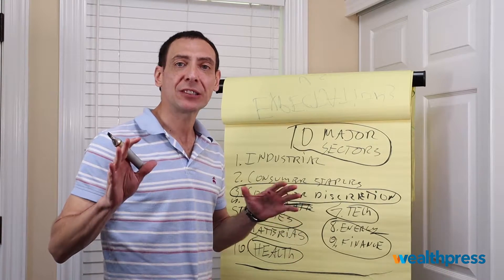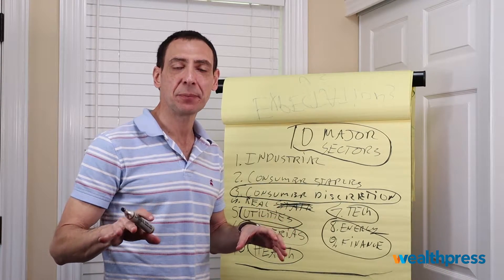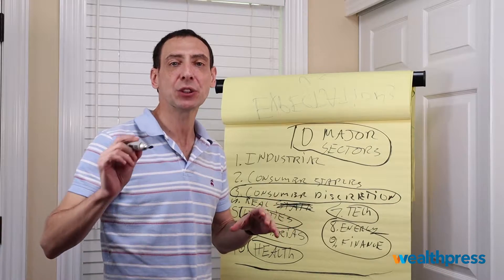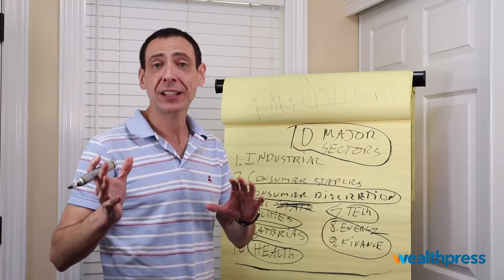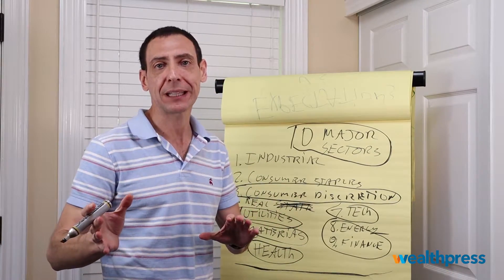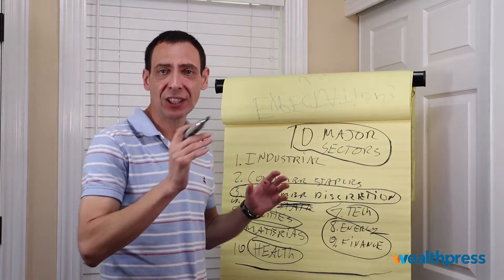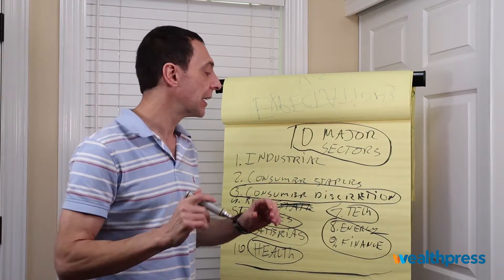Folks, in the last video I talked about the 10 major sectors of the S&P 500. I explained how each one reacts to a bullish market cycle, to a bearish market cycle, to a choppy, sideways, two-sided market cycle.